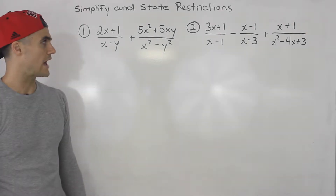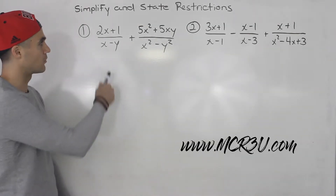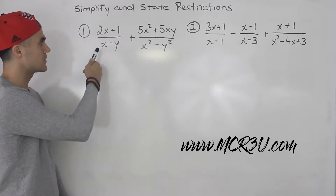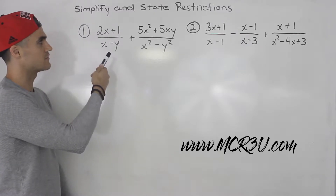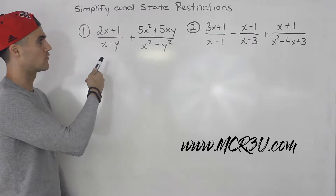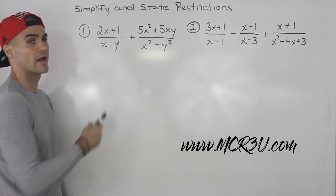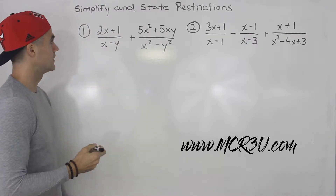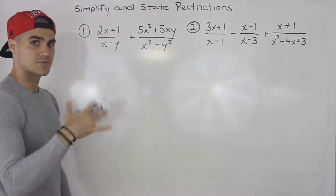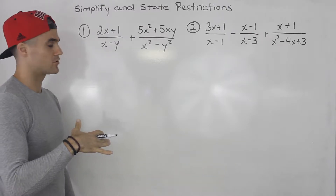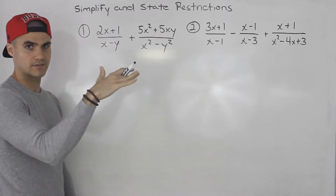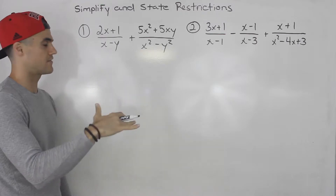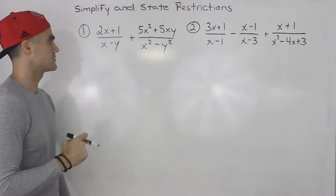Moving on with adding and subtracting rational expressions, starting with number one. As we did in the previous examples, three steps: factor, state restrictions, and then simplify.